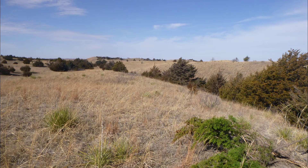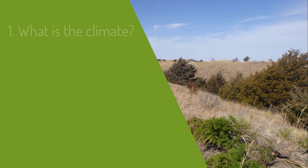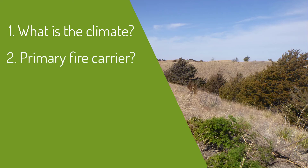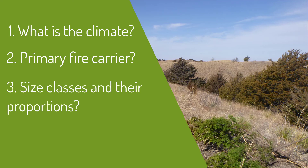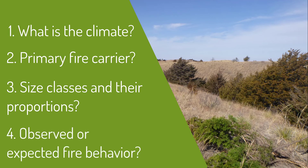Selecting a fuel model can be done by answering these four questions. What is the climate of your area—humid or dry? What is carrying the fire: grass, grass-shrub, shrub, timber litter, timber understory, or slash blowdown? What size classes are represented and what is the proportion of fuel in each category? Are the fuels dead, live, or both? Note the fuel bed depth, compactness, and size of the fuel, and consider both the presence and absence of size classes. What's the observed or expected fire behavior?